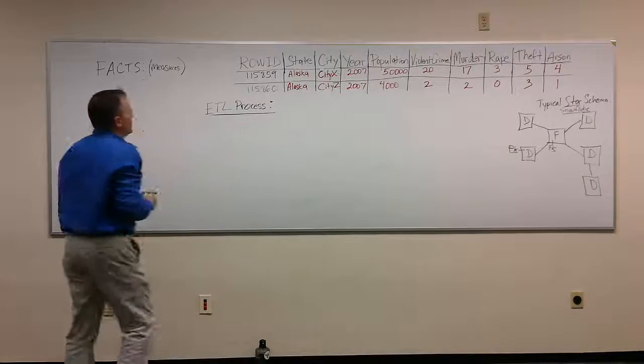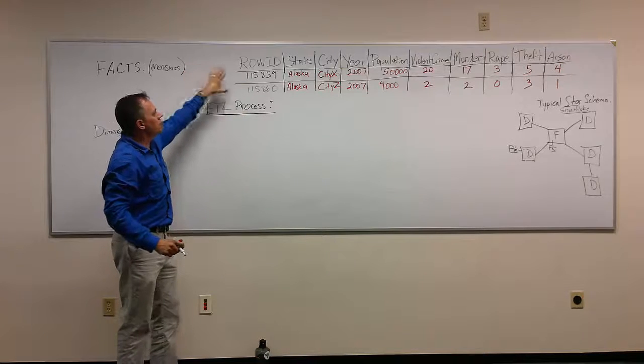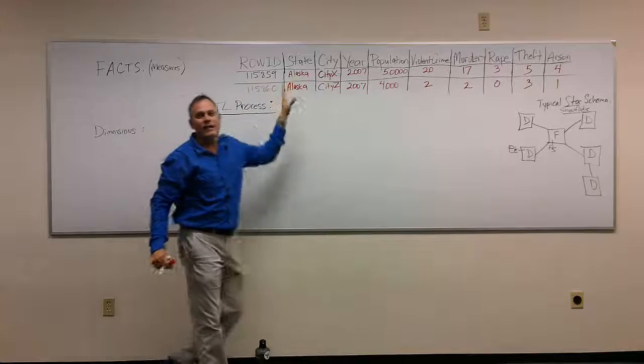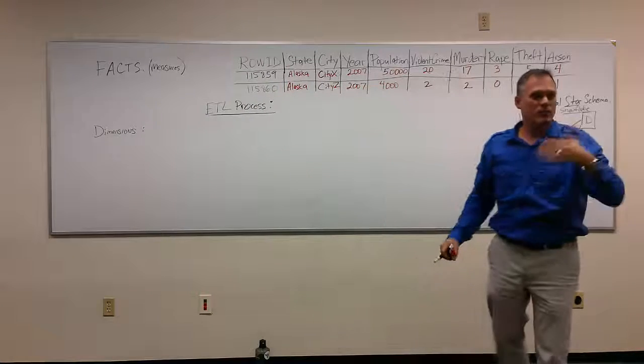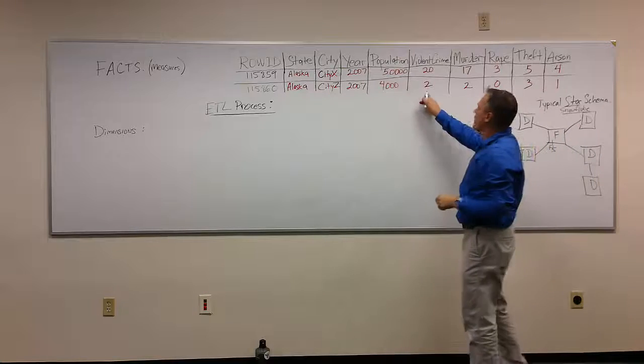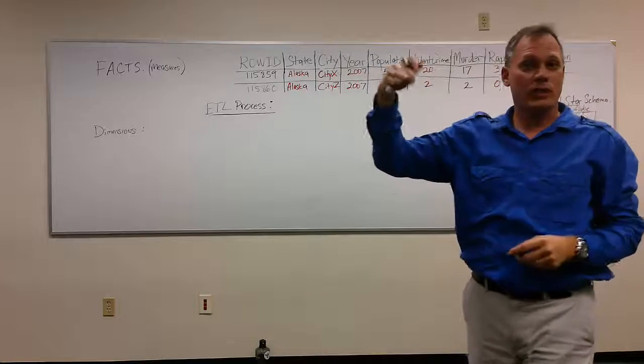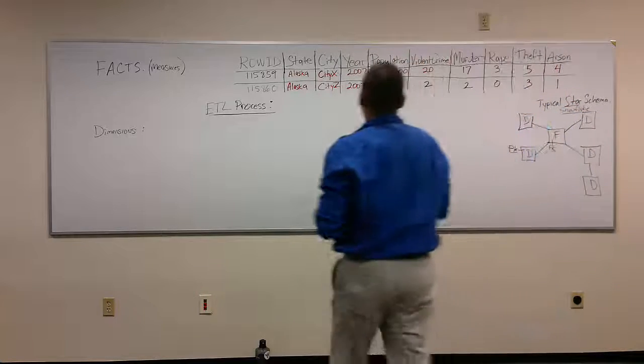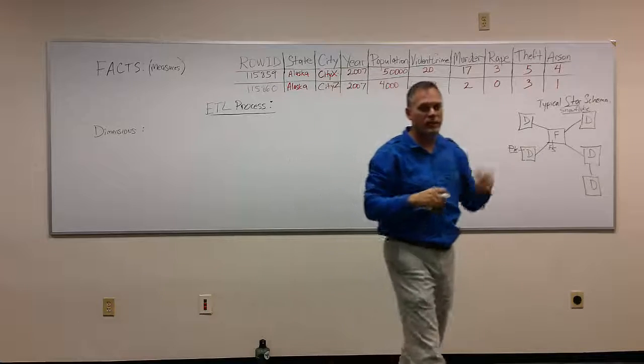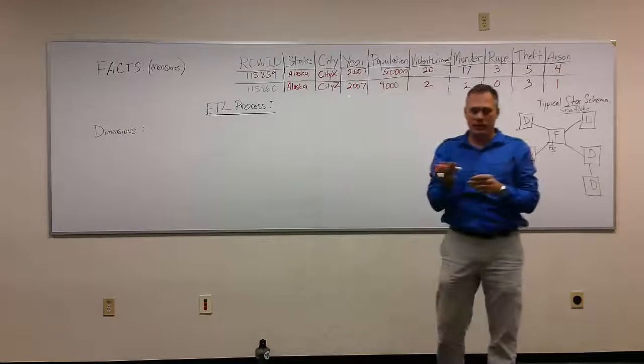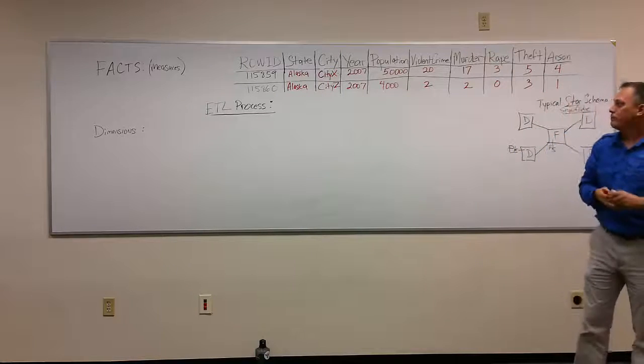Now, the first thing is, we have to examine, as I was mentioning earlier, the data that we've received from some external OLTP, or online transaction system. So, these are the transactions that came from a source system that the FBI used to collect some crime data. Now, these aren't real numbers yet. You'll get a chance to work with real numbers. These are just simulated numbers by fake cities that I put in Alaska, City X and City Y, or City Z.